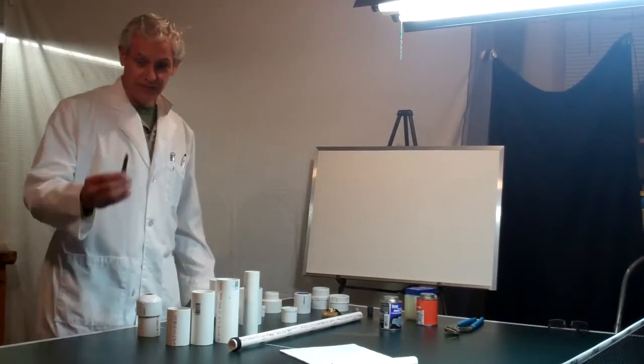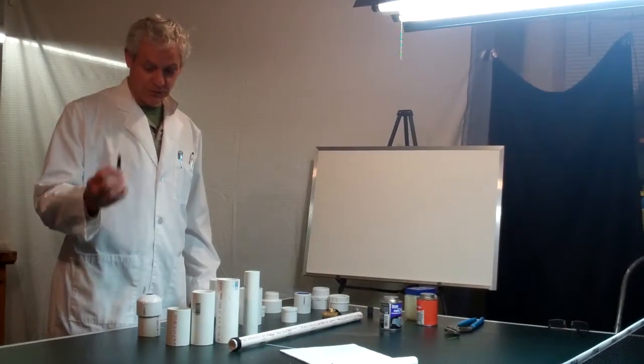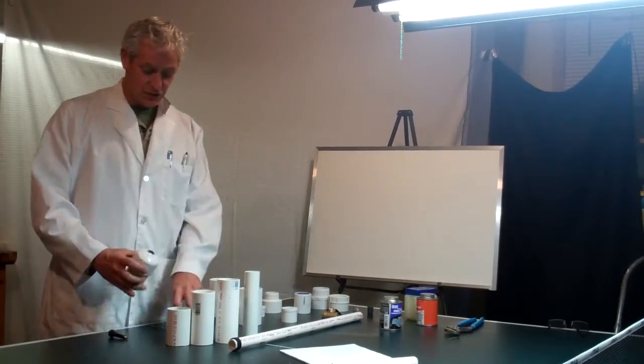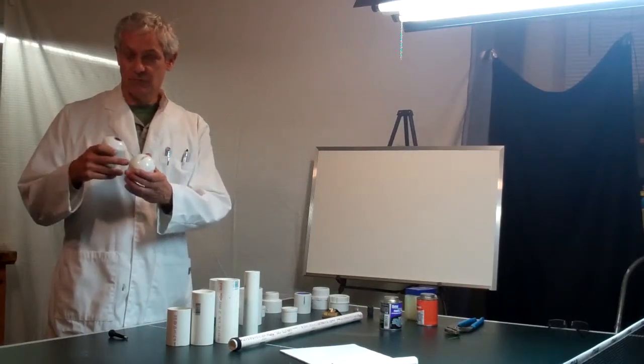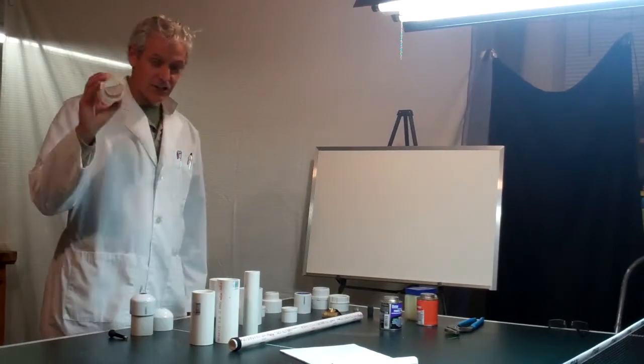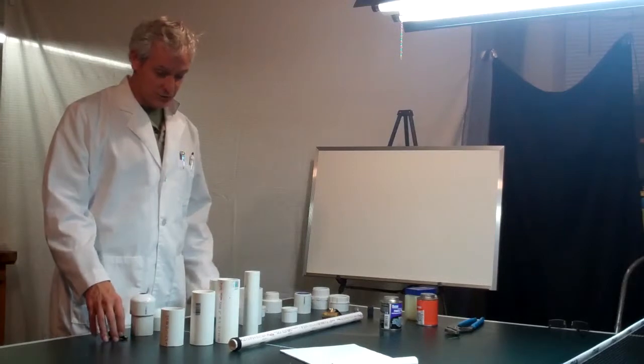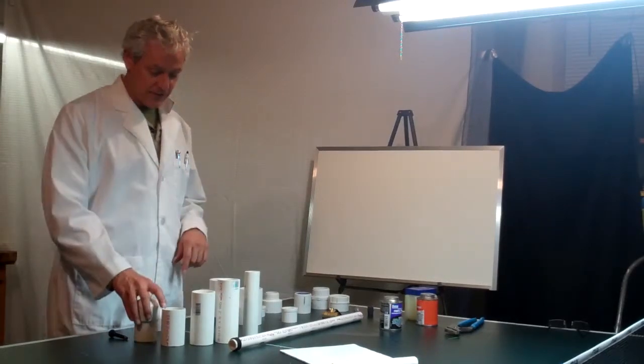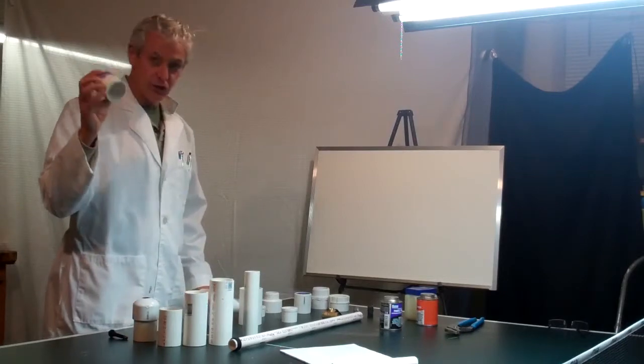First you will need a Schrader valve. This looks like a regular bicycle tube valve. You'll need two 2-inch PVC end caps. You'll need some 2-inch PVC pipe cut into two 3.5 inch pieces, one 6.5, one 7.5, and one 2.5 inch.